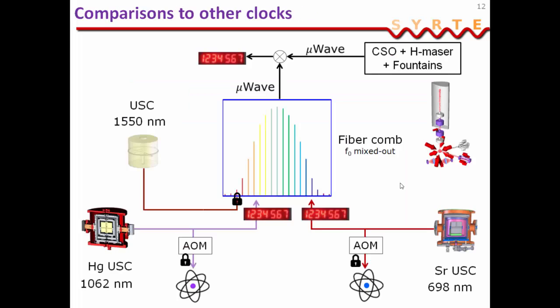So, the heart of the comparison is the fiber comb. This comb is locked to an ultra-stable cavity in the optical domain, and it counts the frequency of the mercury laser, which is locked to the atoms, and of the strontium laser, which is locked to the strontium atoms, which allows us to perform a direct optical to optical frequency ratio measurements. And then the microwave of the comb is used to perform a comparison with the atomic fountain clocks that we have at SYRTE, which are part of a microwave ensemble comprising a cryogenic sapphire oscillator. And this yields stability in the microwave domain, which is really quite good.